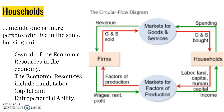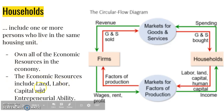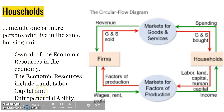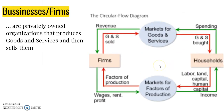Land is all natural resources. Labor is work for which you are paid. Capital is goods used to produce other goods or services. And entrepreneurial ability is a human resource that combines other resources to provide new goods and services to the market. Businesses, or firms, are privately owned organizations that produce goods and services and then sell them.